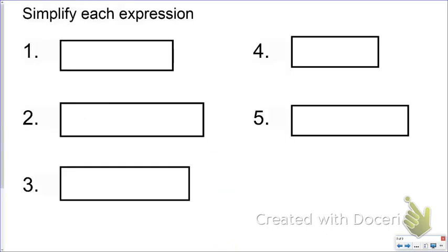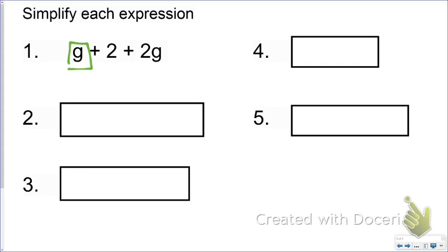Now time for you to try some on your own. G and 2G are like terms, so I can combine those. That equals 3G. And then positive 2 is not like terms with the G family, so I just bring this down. I have simplified this expression to 3G plus 2.